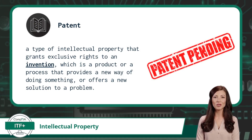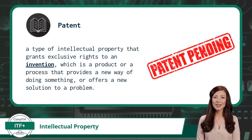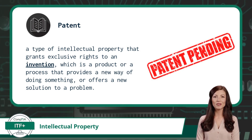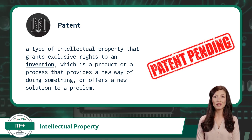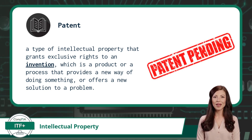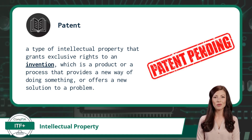The last intellectual property we will cover is a patent. A patent is a type of intellectual property that grants exclusive rights to an invention, which is a product or a process that provides a new way of doing something or offers a new solution to a problem. Unlike copyrights, patents can be applied to an idea, even if the idea has not yet been made tangible.